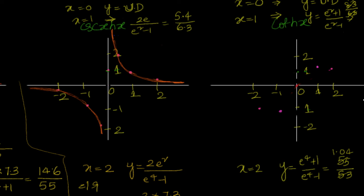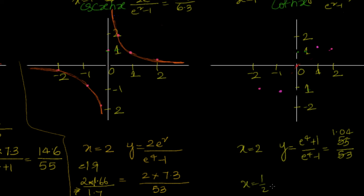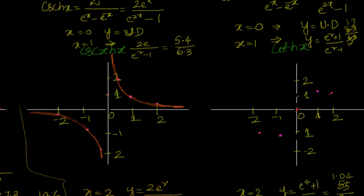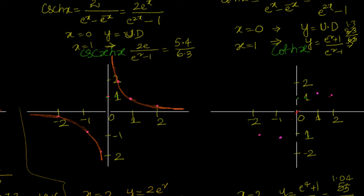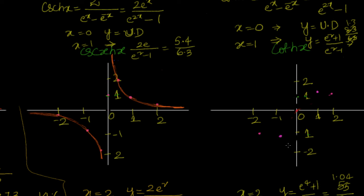For x equal to 1/2, y equals (e + 1) by (e - 1), which is 3.7 by 1.7, approximately 2.2. So at x equal to half, y is approximately 2.2, and at x equal to negative half, y is approximately negative 2.2. You can see as x approaches 0 from either side, the values grow very large.